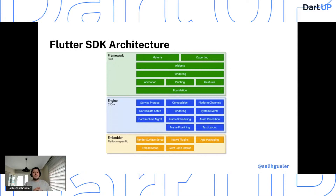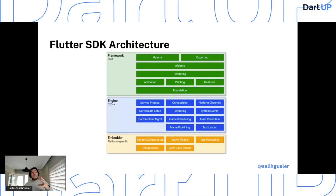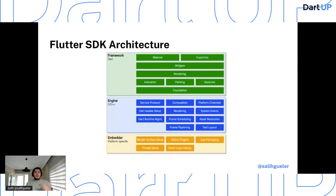Flutter's team thought about an architectural understanding and decided on a heavily layered architecture. This is really important because any of the layers are interchangeable. You can see the famous architectural overview: at the bottom is the embedder, on top of it the engine, and on top of that the framework. Flutter supports mobile, desktop, and web.